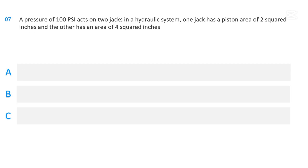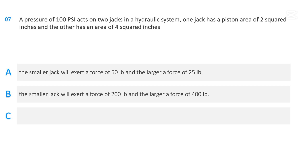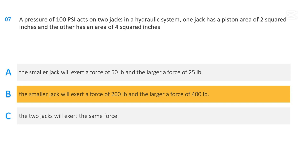A pressure of 100 psi acts on two jacks in a hydraulic system. One jack has a piston area of 2 square inches and the other has an area of 4 square inches. The smaller jack will exert a force of 50 pounds and the larger 25 pounds. The smaller jack will exert a force of 200 pounds and the larger 400 pounds. The two jacks will exert the same force. The correct answer is the smaller jack will exert a force of 200 pounds and the larger a force of 400 pounds.